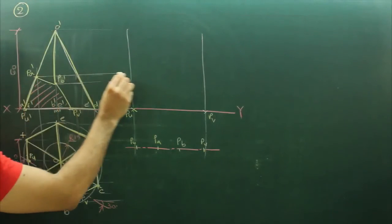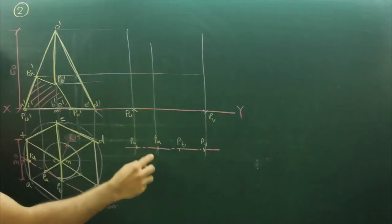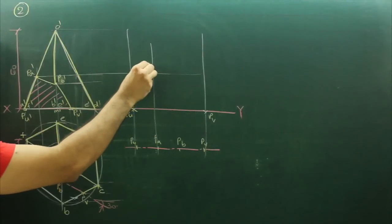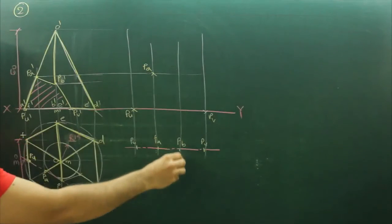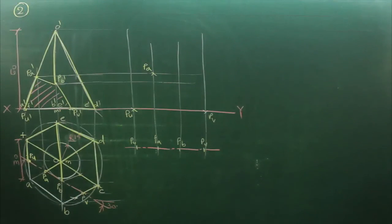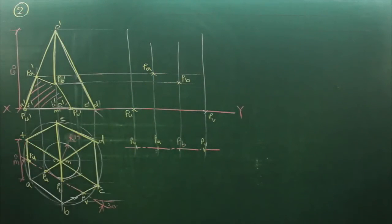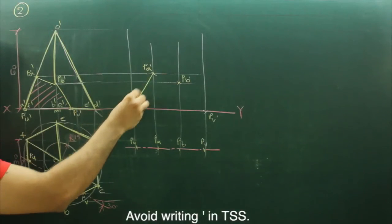After that will extend PA prime from here and PA prime from here, wherever they intersect, that is point PA. Same way will extend PB from here, PB prime from here, whatever points we will get, that is PB prime. Then we will join all these points with straight line.